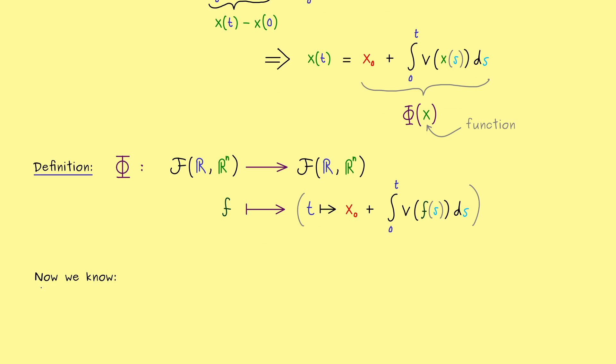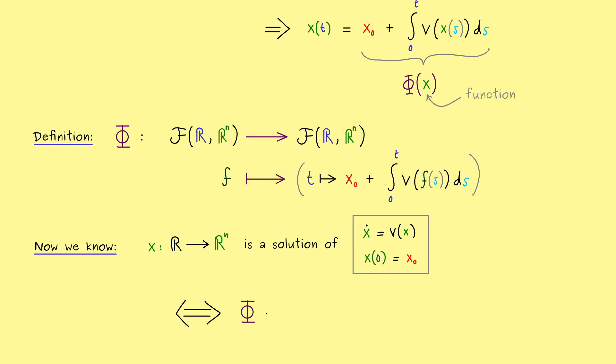And this one we can use now to write down a solution of the initial value problem. This is definitely something you should remember, because it's important for the next videos. Namely, a function x defined on the real number line is a solution of our given initial value problem if and only if phi of x is equal to x. And this is what we call a fixed point equation, because the function x is a fixed point for the map phi. This means we have translated our problem. In order to find solutions, we can just find fixed points for the function phi.